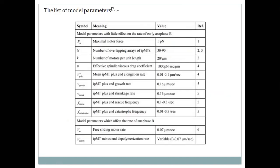Here is the list of model parameters. The two most important are V_m — maximum unloaded velocity of sliding motors — and V_depol — rate of depolymerization. These two parameters primarily affect the rate of spindle elongation. Changes to other parameters may not significantly affect the elongation rate, at least initially.